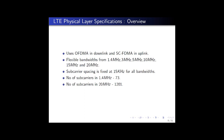Looking at the LTE physical layer specifications from 3GPP: LTE uses OFDMA in the downlink and SC-FDMA or single carrier FDMA in the uplink. A distinguishing feature of LTE compared to 3G technologies is that instead of a fixed bandwidth, LTE allows flexible bandwidth ranging from 1.4 megahertz to 20 megahertz. The subcarrier spacing for OFDM is fixed at 15 kilohertz across all system bandwidths, making the number of subcarriers 73 for a 1.4 megahertz system and 1201 for a 20 megahertz bandwidth system.